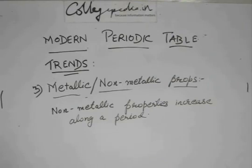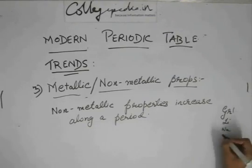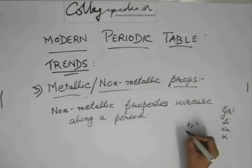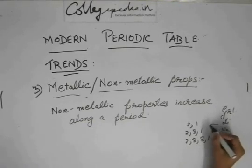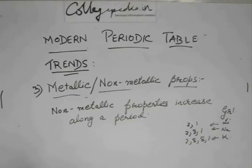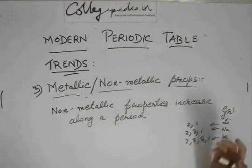Consider group 1: lithium, sodium, potassium. Lithium is 2,1; sodium is 2,8,1; potassium is 2,8,8,1. The valencies of all three are the same and all three are metals. But which one is more metallic — meaning which one can donate its electron more easily and form a positive ion more easily?